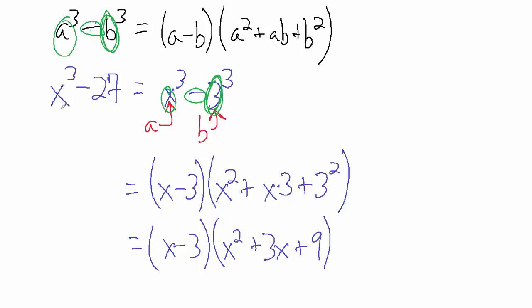So that's how we factor x cubed minus 27 using this formula for factoring a difference of cubes.